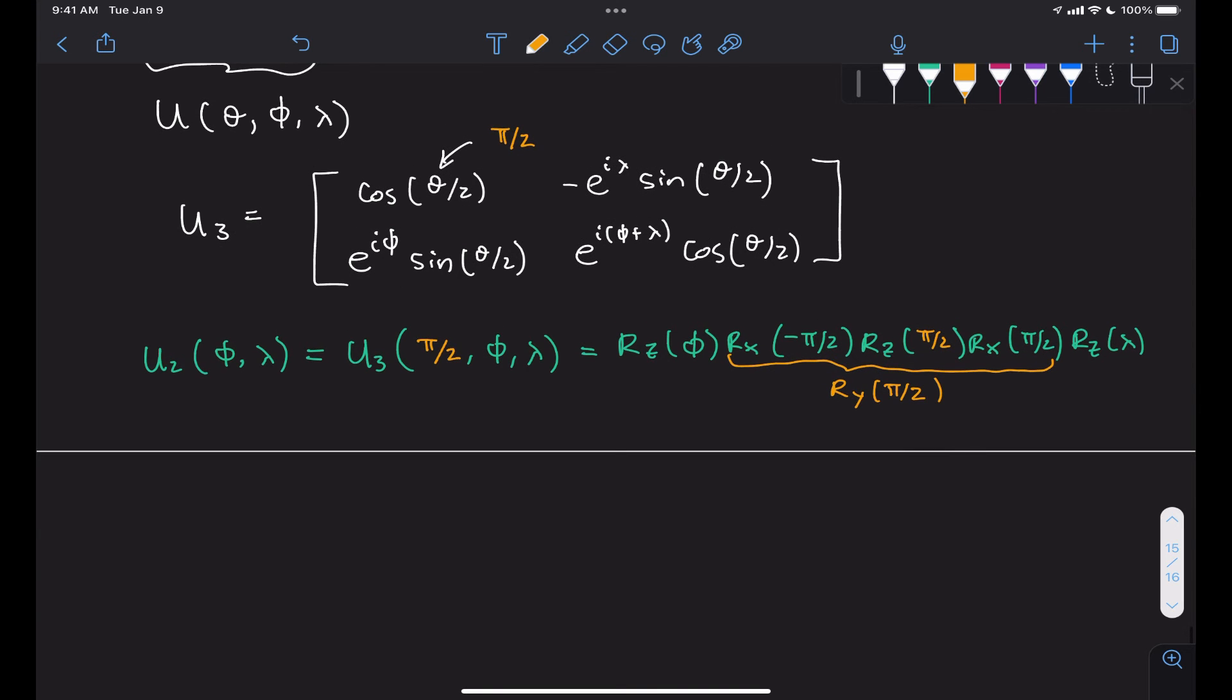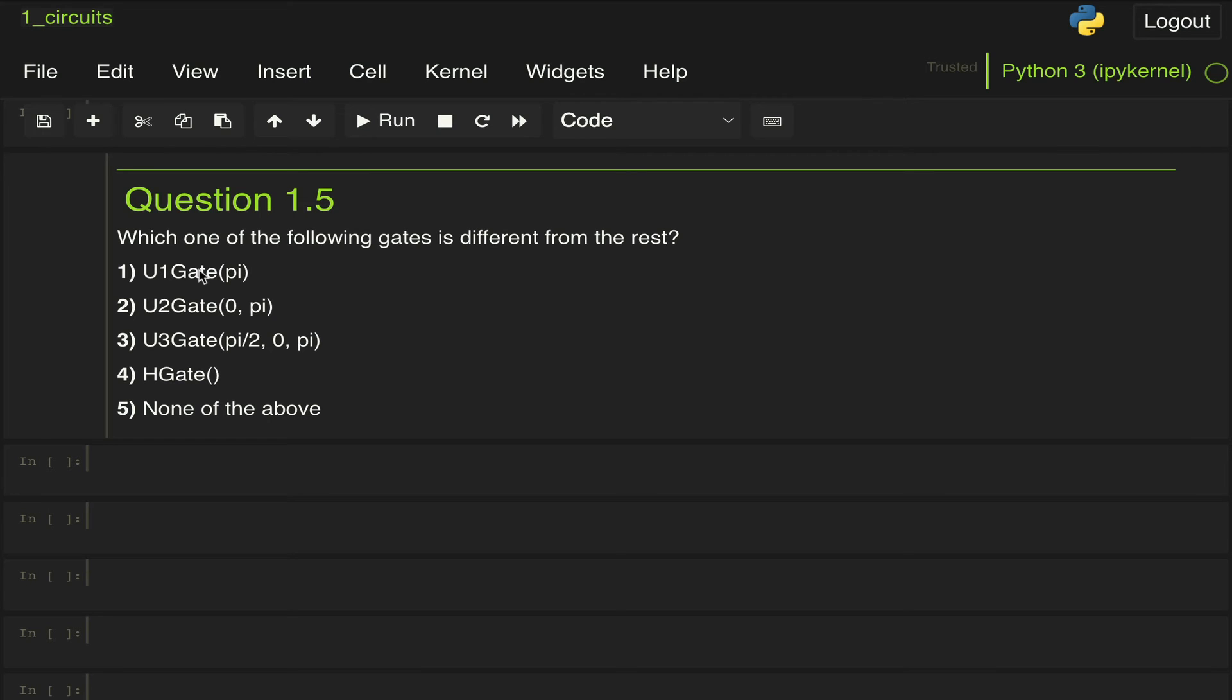Now, for this problem, we're given a U3 with angles of pi over 2, 0, and pi. We already know this is the same as having a U2 with angles of 0 and pi, which we already derived and is equal to an H gate. So the option that is different in our problem is option 1, which is the U1 gate of pi.